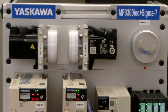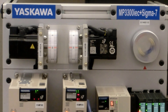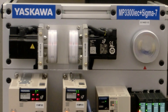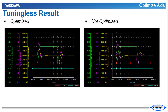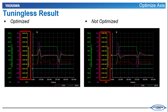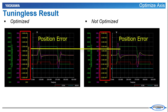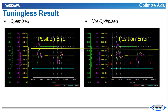The MP3300 IEC is programmed to command the same cam profile on both axes. I'll show the result of the tuning process using traces taken from our software Sigma-Win+. By default, the servos are in the adaptive tuningless mode, and you can see the two traces are about the same. The position error of the optimized axis is actually significantly higher than the original not-optimized axis.